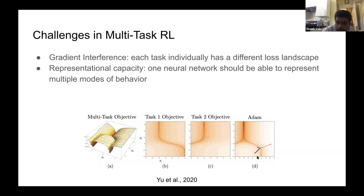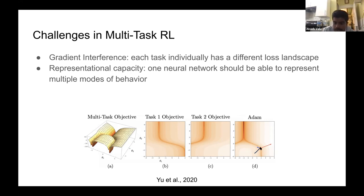If you look at plot D, where you have the sum of the two task objectives, you want to get to the top slice where the valleys overlap, because now you're in a region optimized for both tasks. However, if you're at a certain point, the gradient for task one is dominating over task two. The red arrow is the task one gradient and the blue arrow is the task two gradient — if you take the sum, you go somewhere that doesn't optimize for either.